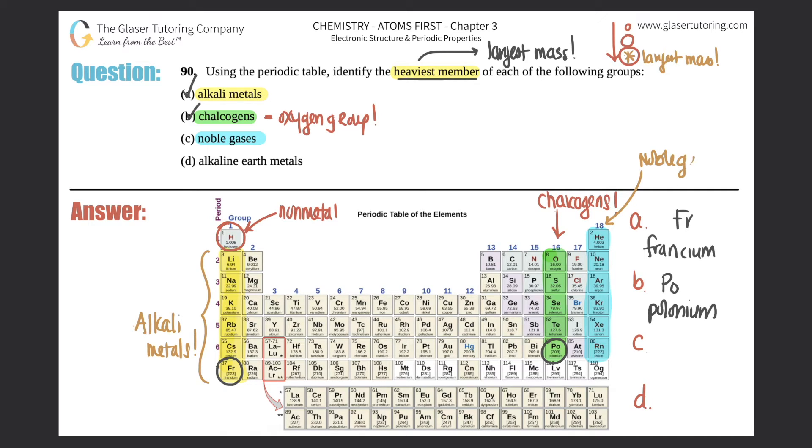Also called inert gas group because they don't really react with a lot of stuff. Who is the heaviest member of the noble gases? It would be element 86, radon. So Rn, radon, that ends that one.